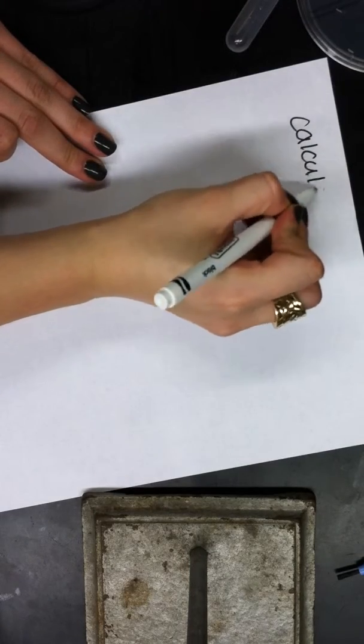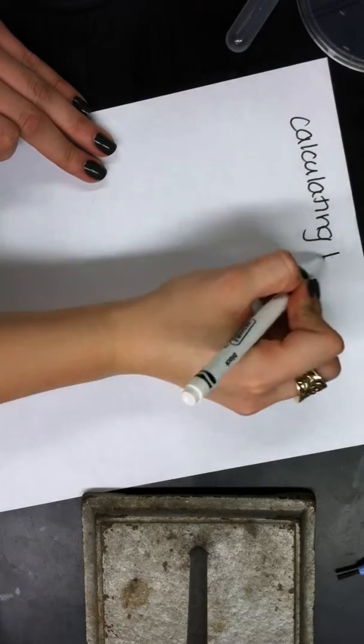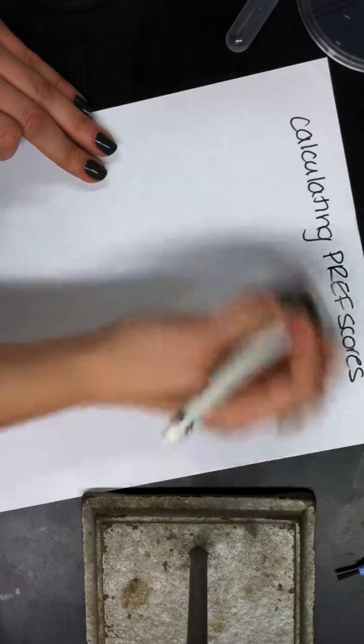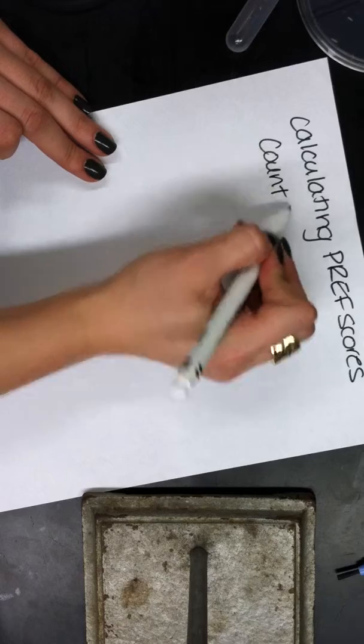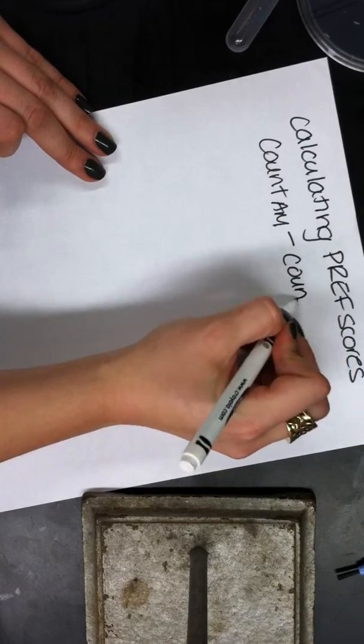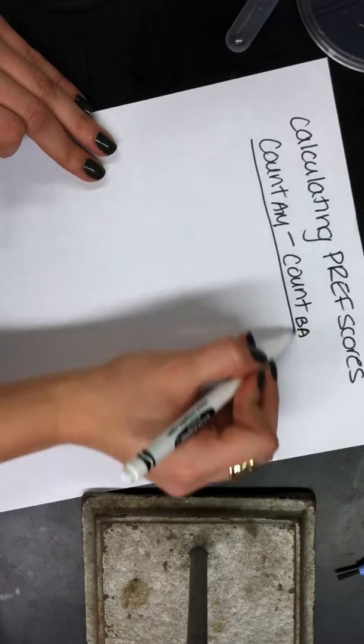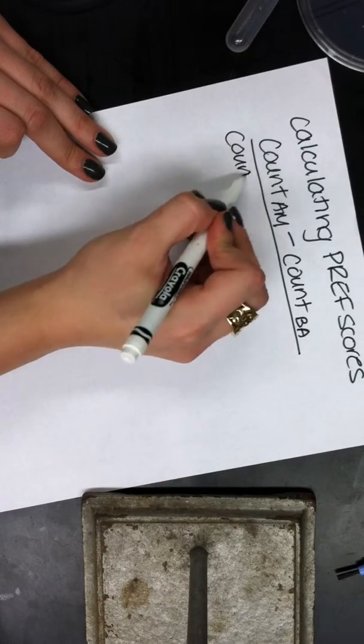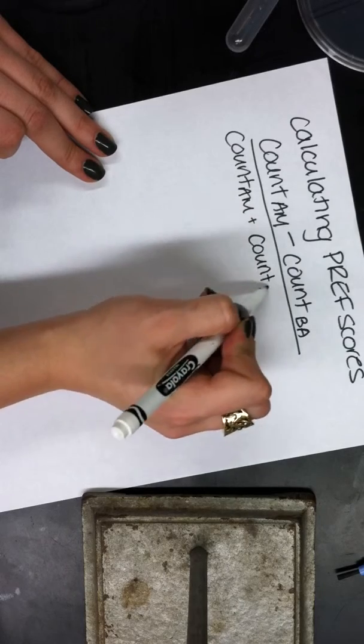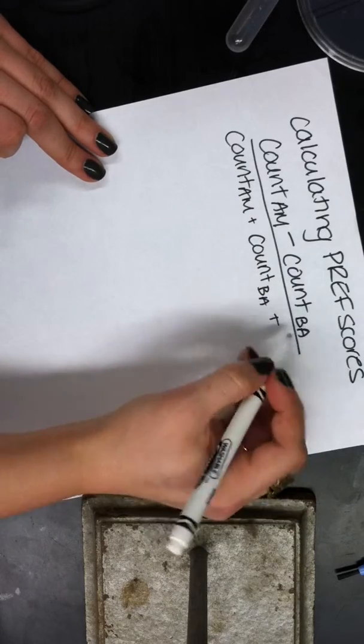So when calculating PREF scores, you want to take the amount you counted from the AM and subtract the count from the BA all over count AM plus count BA plus neutral.